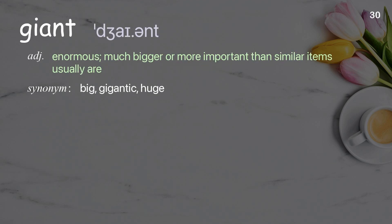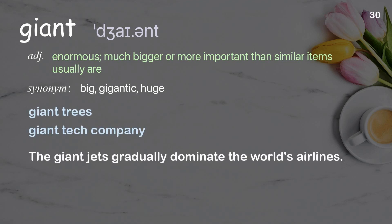Giant: extremely big, much bigger or more important than similar items usually are. Examples: giant trees, giant tech company. The giant jets that gradually dominate the world's airlines.